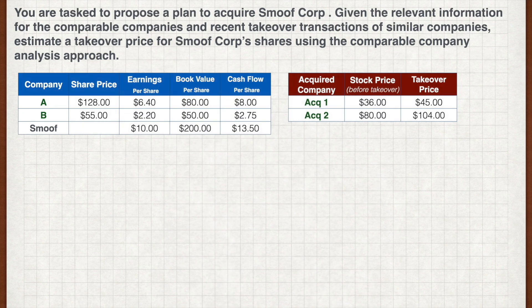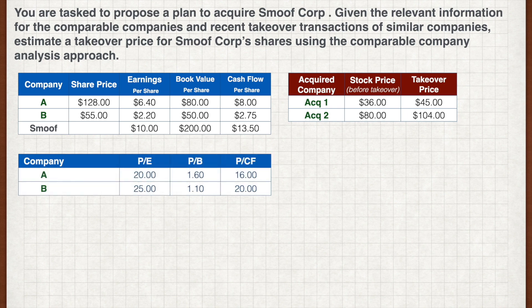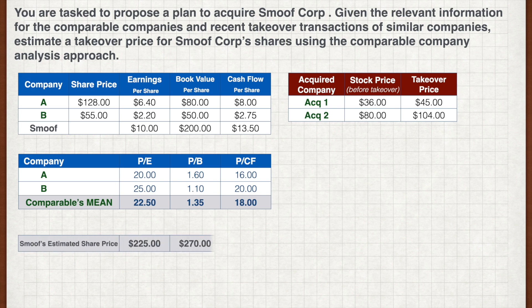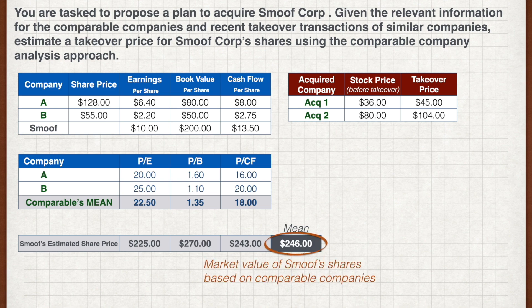Since we are only given the earnings, book value, and cash flow per share, we are only able to calculate the PE, PB, and PCF ratios for the comparable companies. Assuming they are equally similar to the target company, we calculate the simple mean for the comparable companies. Based on the comparable companies' mean ratios, we get the following share price estimates for SmoothCorp, and the mean of these three figures is $246.